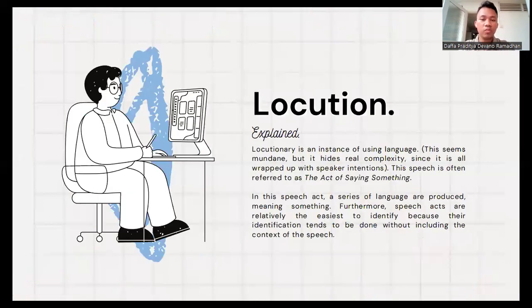And then apart from illocution, we have locution. Locutionary is an instance of using language. This seems mundane, but it hides real complexity since it is all wrapped up with speakers' intentions. We don't really know what speakers really intend when they are speaking. This speech is often referred to as the act of saying something. In this speech act, a series of languages are produced, meaning something. Furthermore, speech acts are relatively the easiest to identify because their identification tends to be done without including the context of the speech.